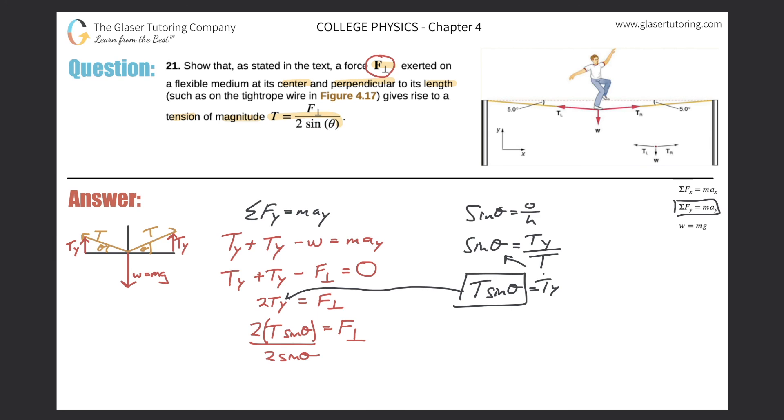I divide them both out of both sides - they cancel here on the left, leaving me with T equals the force perpendicular, which was just the weight of the object, divided by 2*sine(theta). And it is a thing of beauty - matches up perfectly.